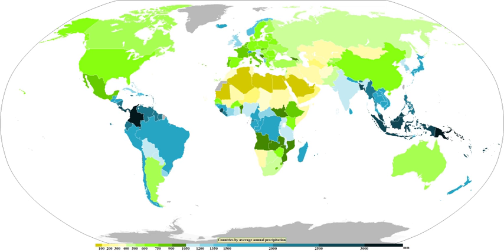The five primary classifications can be further divided into secondary classifications such as rain forest, monsoon, tropical savanna, humid subtropical, humid continental, oceanic climate, Mediterranean climate, steppe, subarctic climate, tundra, polar ice cap, and desert.